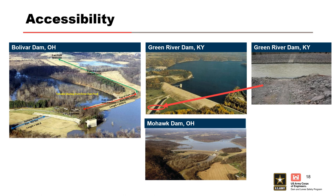At Bolivar Dam, the downstream toe is inundated by Dover Dam's pool, creating a very narrow time window to mobilize and place a filter during a seepage incident. A low water crossing is present at the outlet channel of Green River Dam, and in the event of an emergency, large releases may prevent access to over two-thirds of the downstream toe. At Mohawk Dam, access from the left abutment is cut off by spillway flow, and access from the right abutment is cut off by roadways at lower elevations submerged by the reservoir. Emergency stockpiles of materials for flood fighting can also become inaccessible and inundated during flood events.